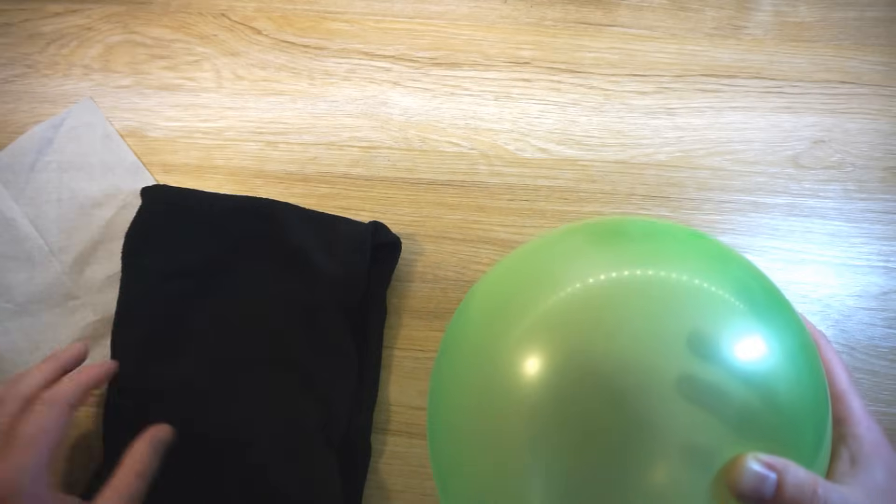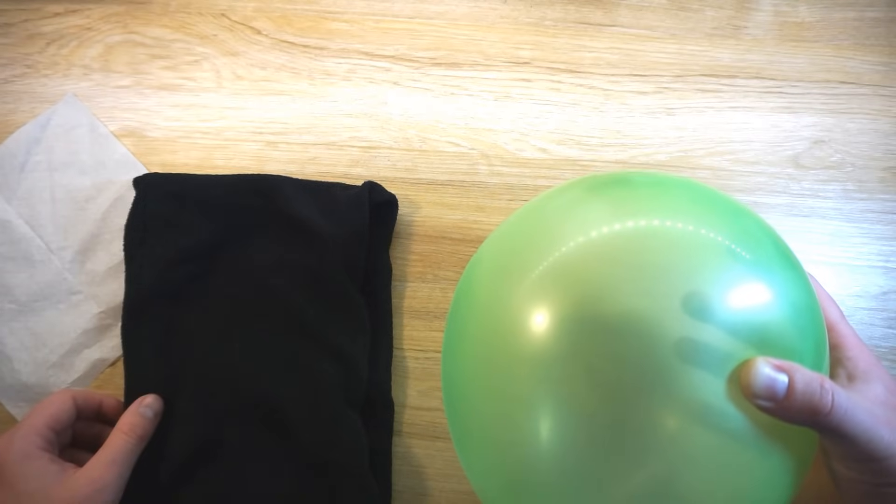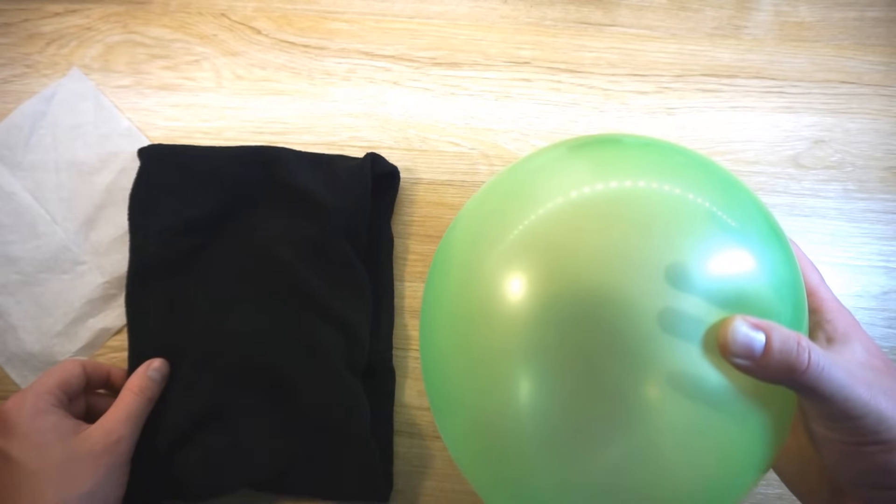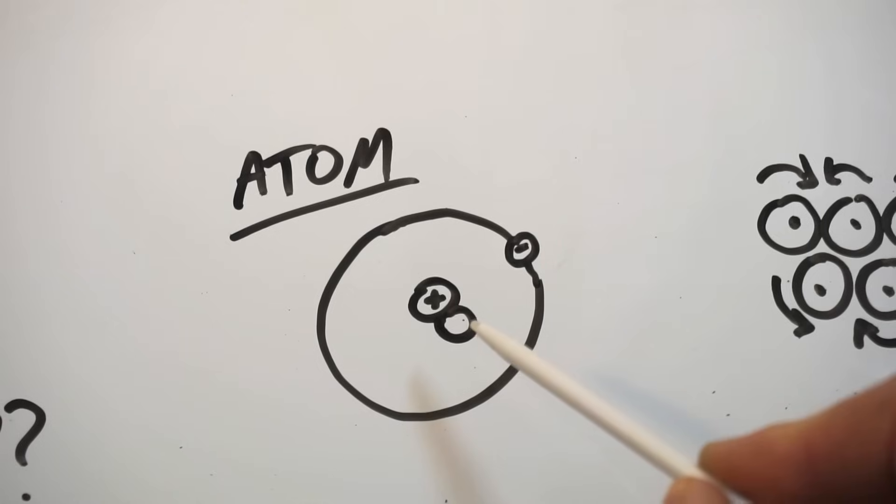Another example of a non-contact force is static electricity, and you might have noticed this when you've touched something metal and you feel a bit of a shock from it. To explain how this one works, we need to talk about electrons again, and just a reminder that electrons are the negatively charged particles within atoms.